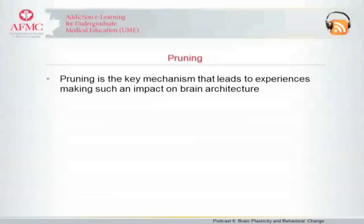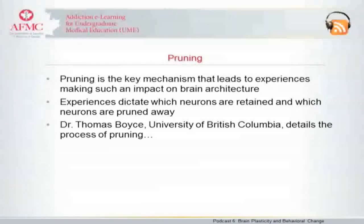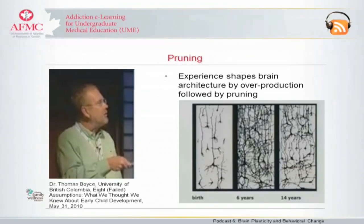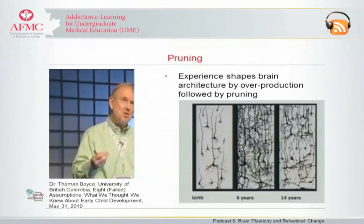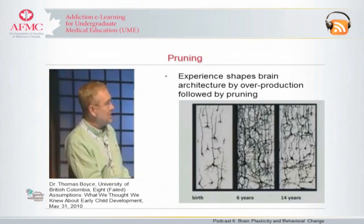What is the key mechanism that leads to experiences making such an impact on brain architecture? The answer is that experience dictates which neurons are retained and which are pruned away. Dr. Thomas Boyce, a professor of pediatrics at the University of British Columbia, details the process of pruning. Experience shapes brain architecture by overproduction of neurons and synapses, followed by pruning — the cutting back of numbers of neurons and synapses. At birth there is a typical array of neurons; by age six there is exuberant overproduction; but by 14 years of age there is a thinning out — a kind of sophistication and emerging complexity involving not only production but also retreat in the development of synapses and neurons.